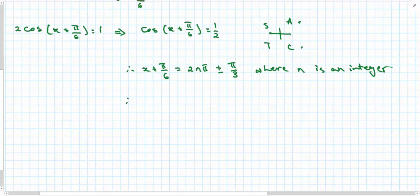So my x is going to be 2nπ + π/3 - π/6, or 2nπ - π/3 - π/6.